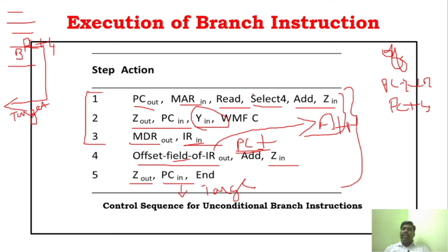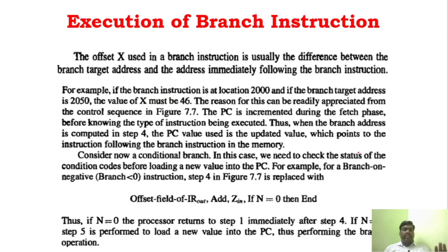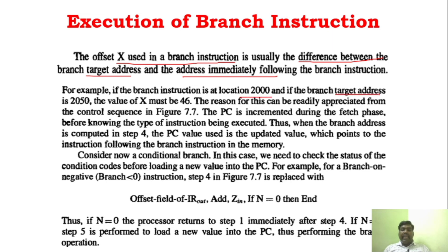This is the example of executing a branch instruction. The key point is that the PC should not execute the next sequential instruction — it has to execute the instruction at the target address. To find out the target address, we add the offset value to the PC. The offset used in the branch instruction is the difference between the target address and the address immediately following the branch instruction. Since the PC is already incremented to PC plus 4, we use the updated PC value.